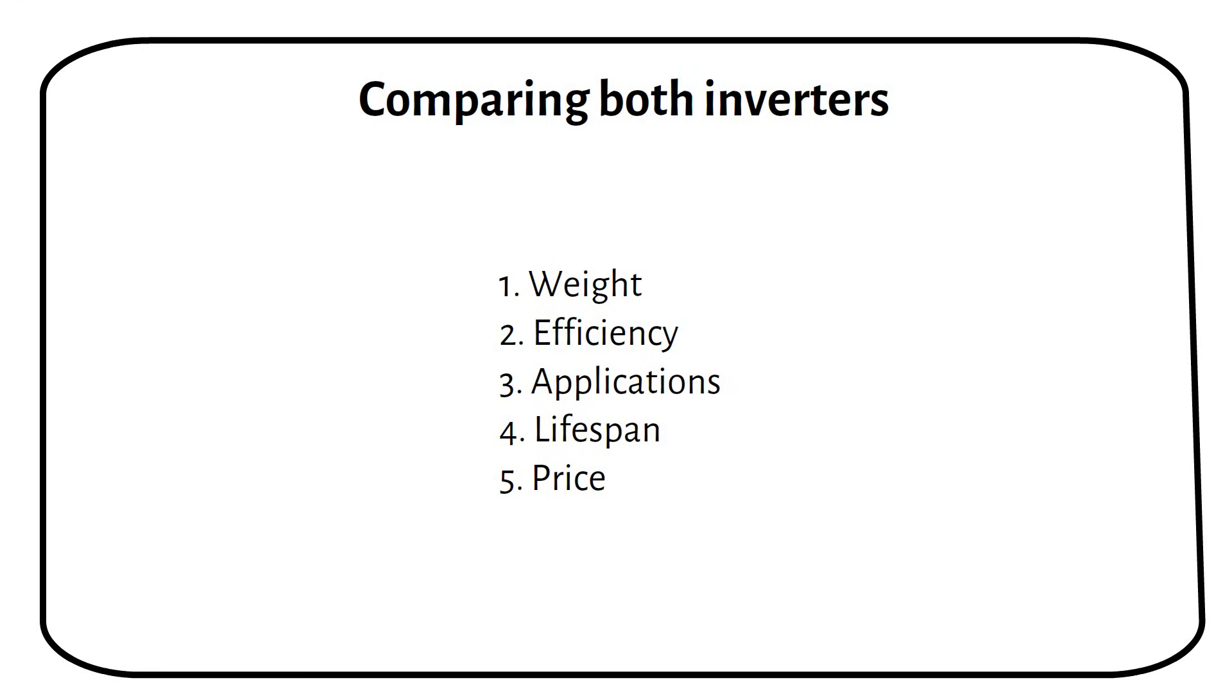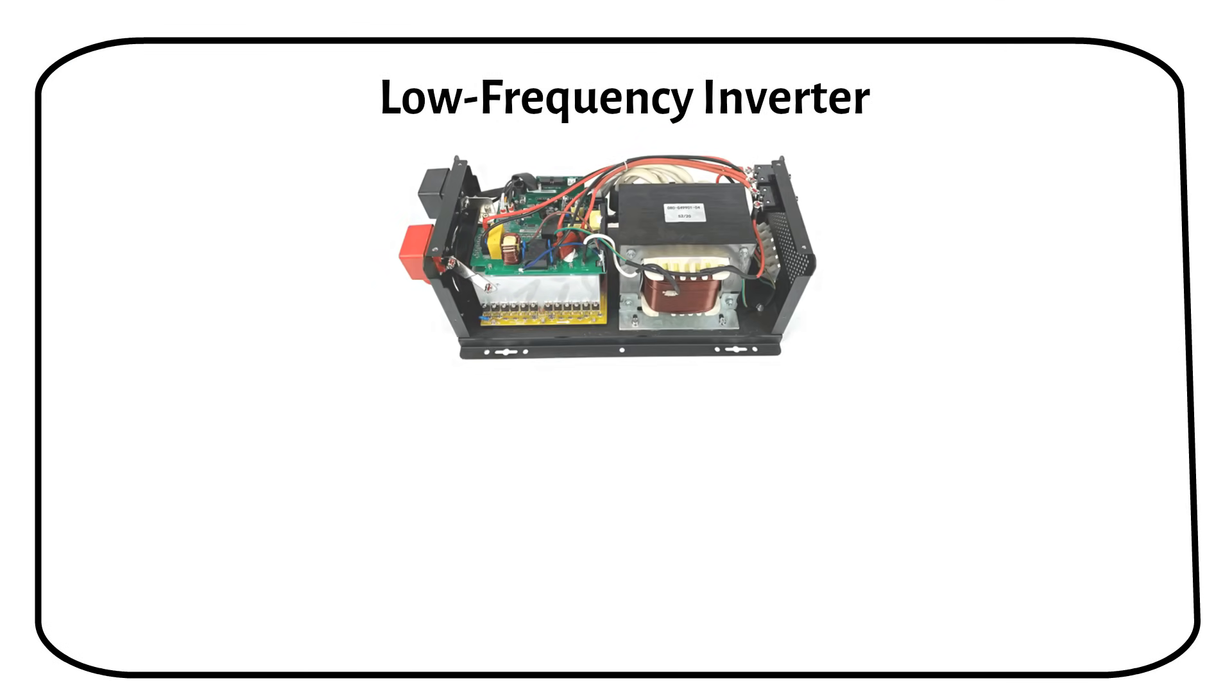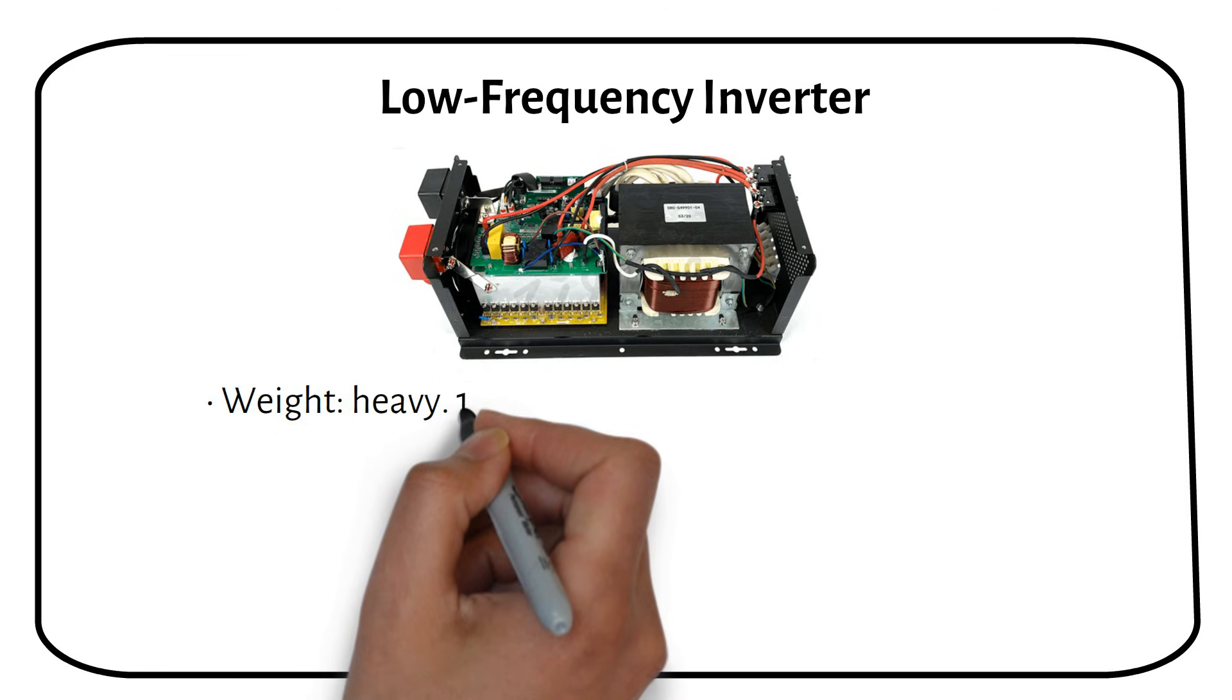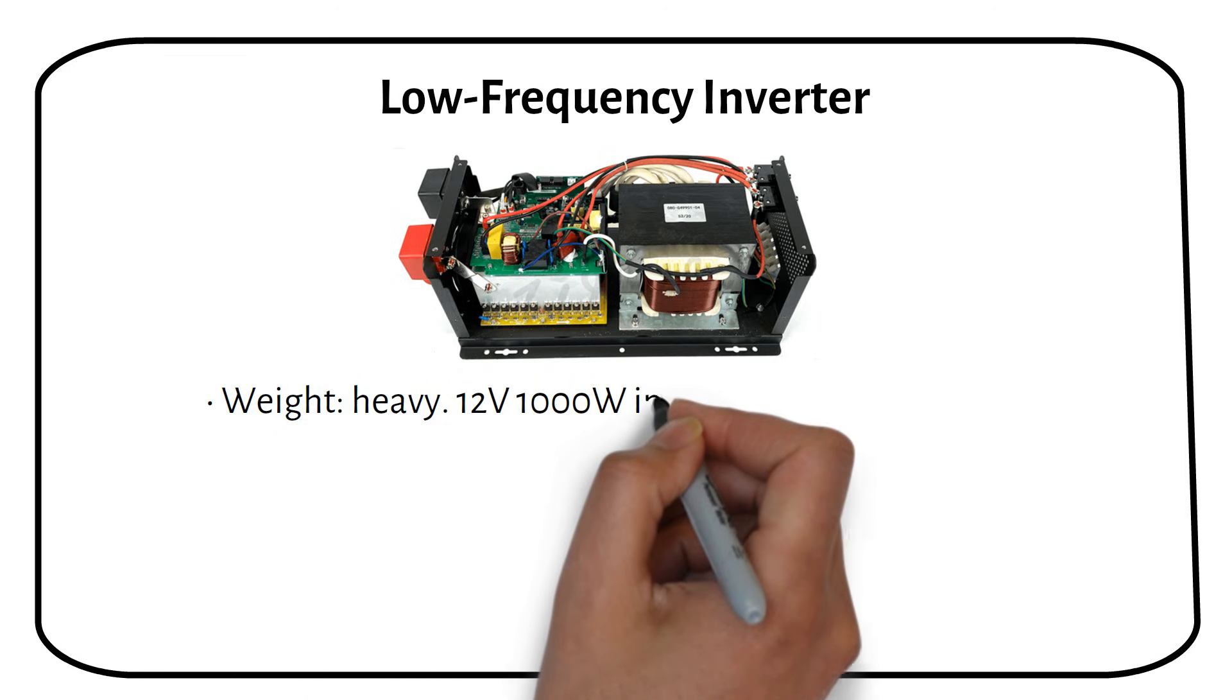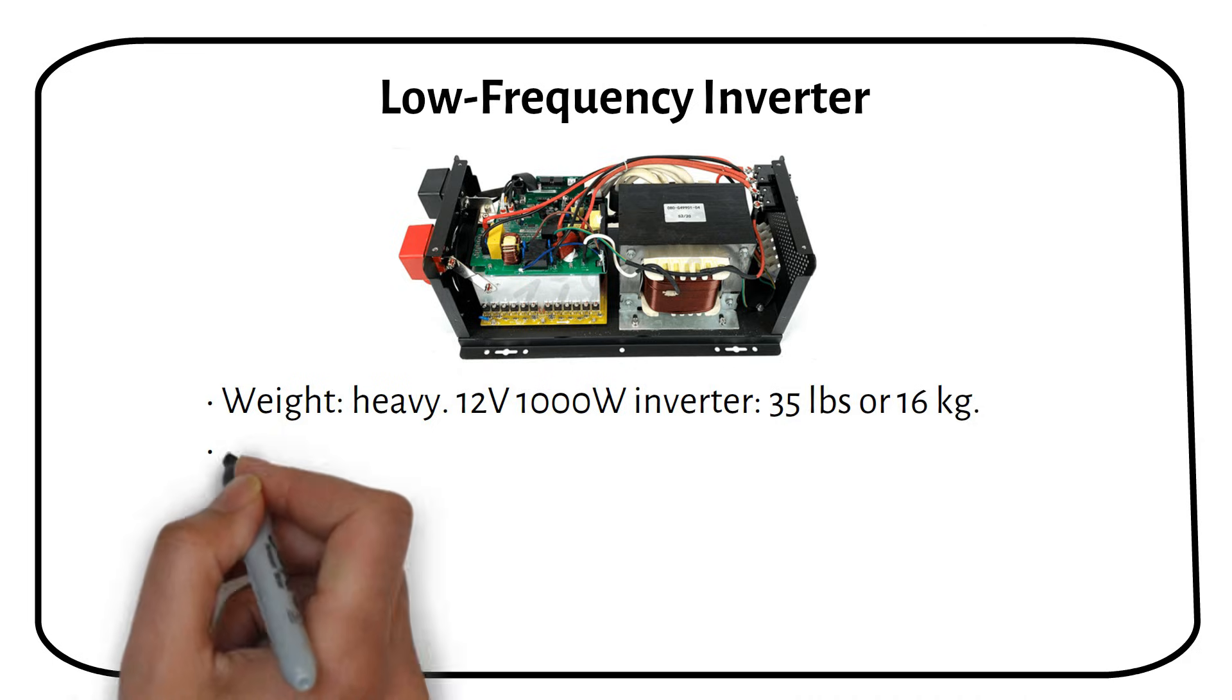Let's take a closer look starting with low frequency inverters. Low frequency inverters are generally heavier because they use larger and heavier transformers. For example, a low frequency 12 volt 1000 watt inverter can weigh around 35 pounds or 16 kilograms.